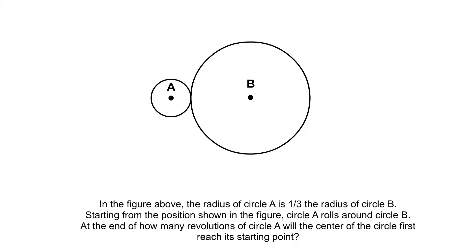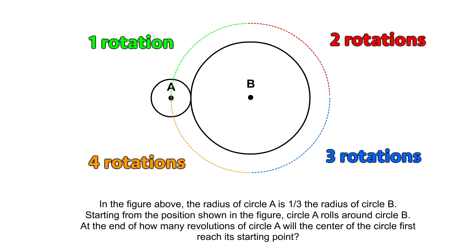In the figure above, the radius of circle A is one-third the radius of circle B. Starting from the position shown in the figure, circle A rolls around circle B. At the end of how many revolutions of circle A will the center of the circle first reach its starting point?